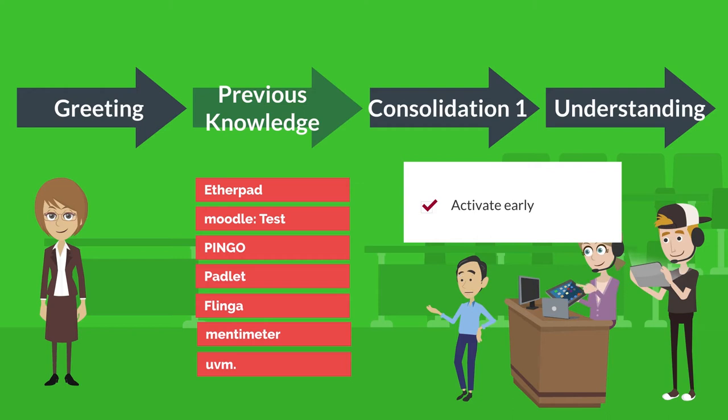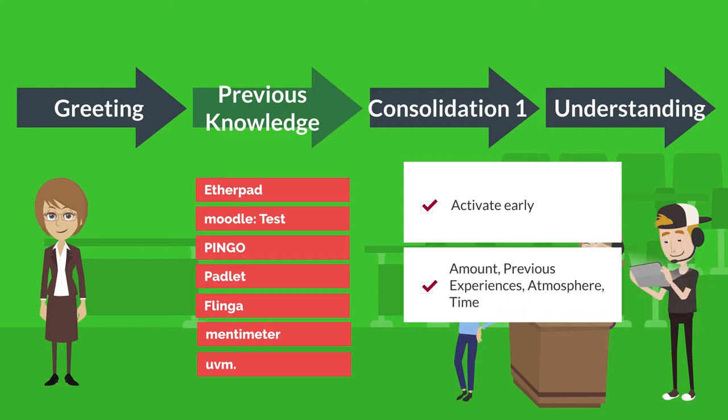Secondly, take care that the tools you use match your group size in a way that makes sense. For example, allowing the students to exchange information through an etherpad is viable for group sizes up to 15 people. For further information on this matter, please check out our accompanying materials.